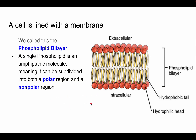Cells are lined with a membrane called a phospholipid bilayer, because there are two layers of a molecule called a phospholipid. A phospholipid is an amphipathic molecule, meaning it's subdivided into a polar region and a non-polar region. The polar region is the hydrophilic head, and the non-polar region is the hydrophobic tail.